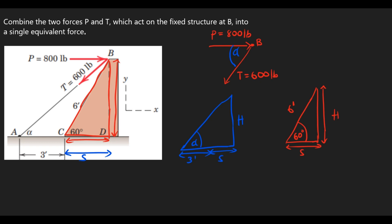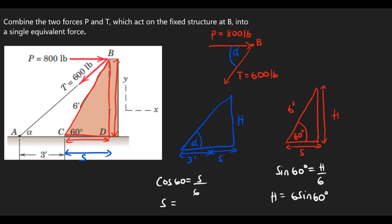H is opposite to the angle, so I can take sine of 60 degrees, which equals H over 6 feet. So H equals 6 sine of 60 degrees. For S, I can take cosine of 60 degrees, which equals S over 6 feet. So S equals 6 cosine of 60 degrees. Simplifying: S equals 6 cosine of 60 degrees, giving 3 feet. And H equals 6 sine of 60 degrees, giving 3 root 3 feet.